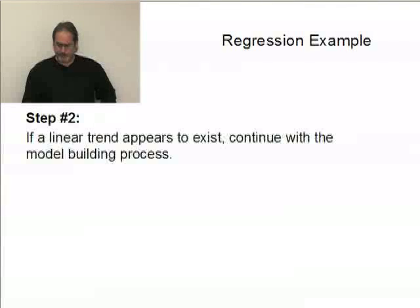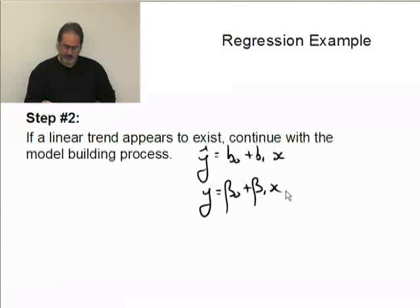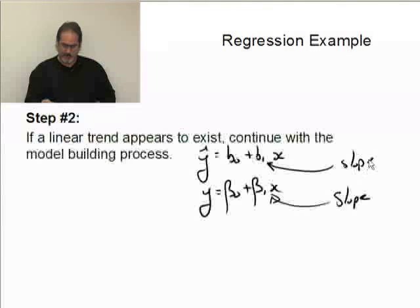In terms of regression, the model that we already looked at suggests that we're going to end up with something that looks like y hat equals b0 plus b1 x. The parameter values for the population is beta 0 plus beta 1 x, and beta 1 is the slope of the regression line. This b1 is the slope of the sample regression line.